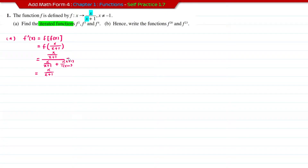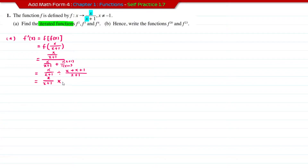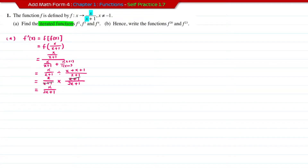This is a fraction, meaning division: x over x+1, divided by the combined denominator. Combining x plus (x+1) over (x+1) gives us x over x+1 divided by (2x+1) over (x+1). Changing to multiplication and flipping, the (x+1) cancels, and finally we get x over 2x+1. That is the answer for f².